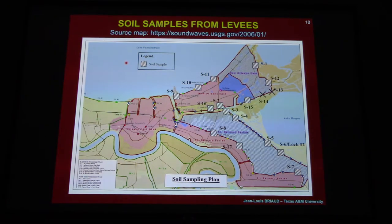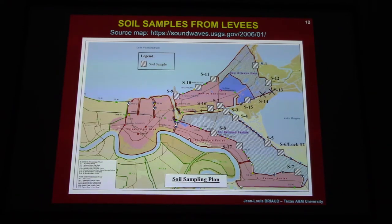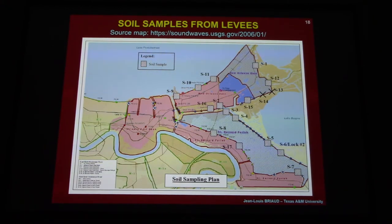Here is a plan view of New Orleans. The levees divide the area into polders - into regions. You can see one levee here, another polder here, another polder there, and so on. We went to the levees right after the disaster and collected samples at the locations shown by those boxes.